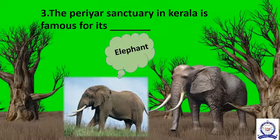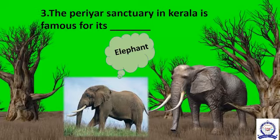Third question: the Periyar Sanctuary in Kerala is famous for its dash. The answer is Elephant.